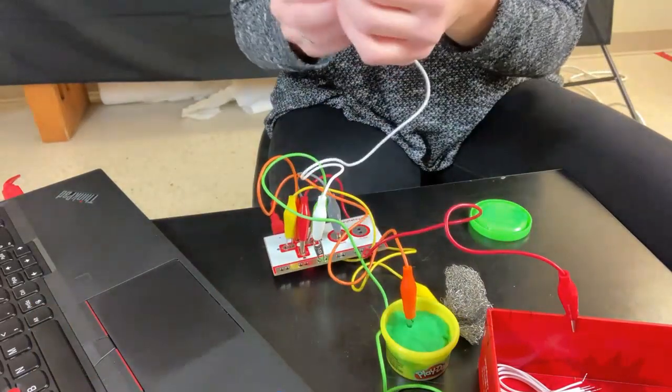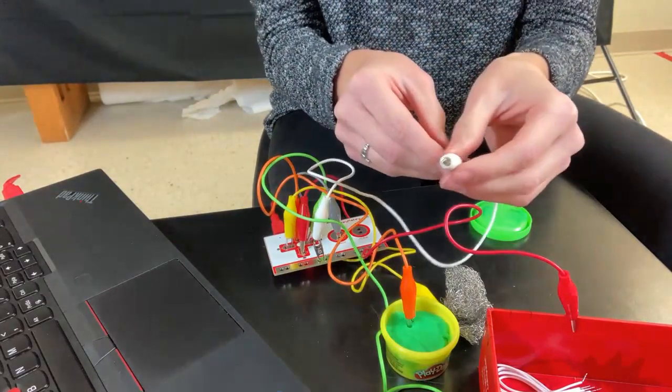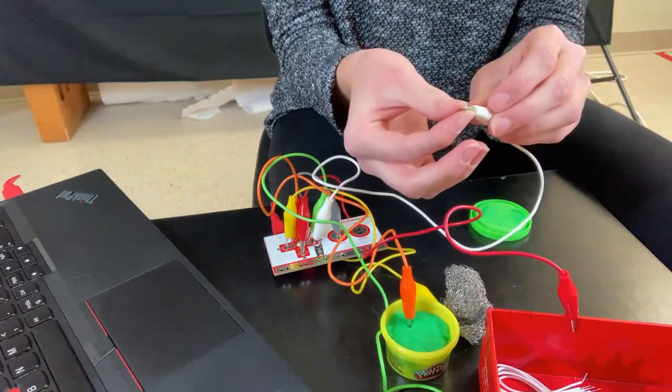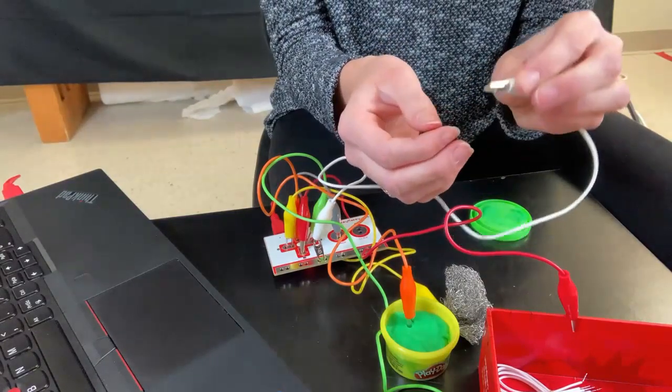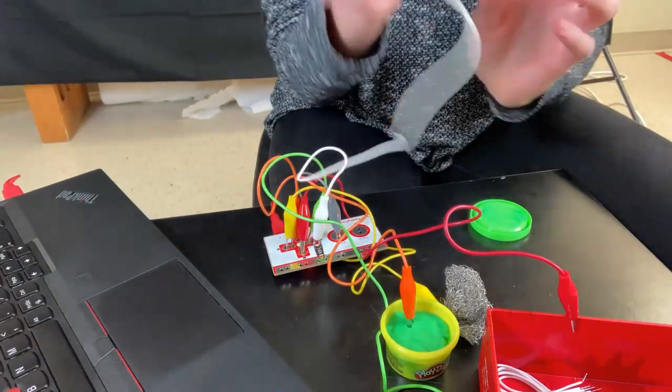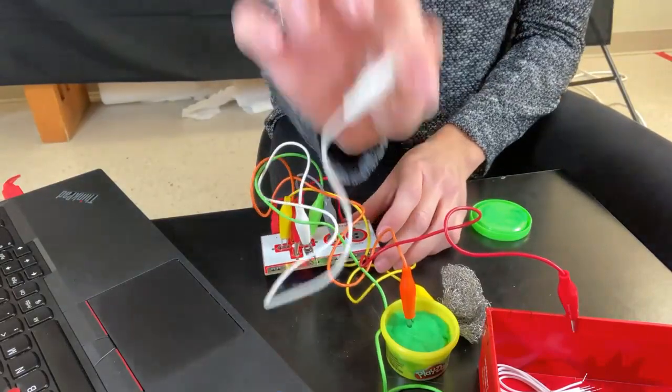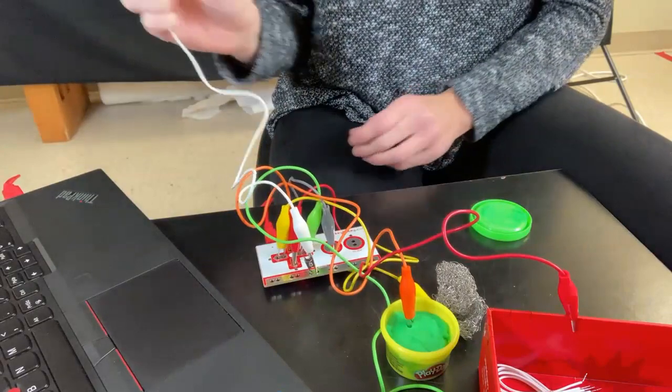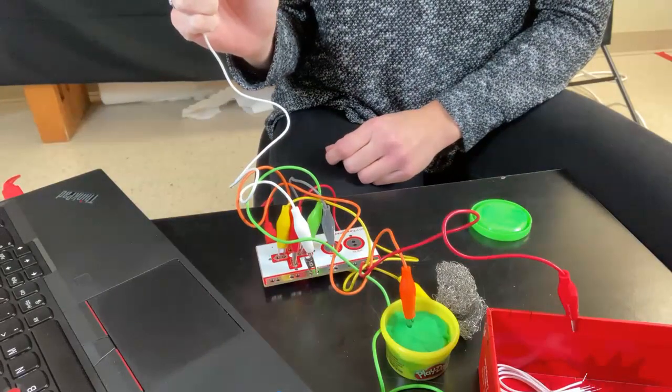And I'm actually going to hold the other end. Now I'm making sure that I'm not holding the plastic part. I'm actually holding the clip. Now you don't need to clip it on yourself. Holding it will work. So I'm holding it. One end is attached to me. One end is attached to earth on my game controller. Let's give this a try now. Let's touch the play-doh.